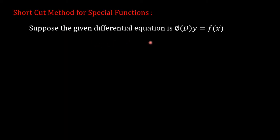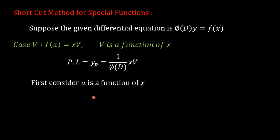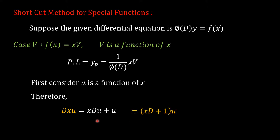Suppose the given non-homogeneous differential equation is φ(D)y = f, and this f is the function x·v, where v is a function of x. Hence yp will be given by (1/φ(D)) of x·v. In the beginning we consider u as a function of x. Consider the derivative of x·u. Apply the product rule — that gives us x·(du) + u, which we write as (xD + 1) of u.